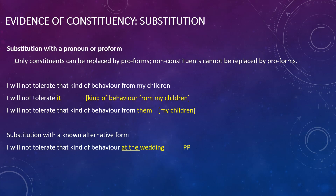So this gives us: 'I will not tolerate that kind of behavior at the wedding,' and this makes sense — it is a grammatical sentence. This suggests that the substitution has been felicitous, or in other words, it has worked out. And this suggests that the substituted item is a prepositional phrase. The logic is: we take something we don't know and replace it with something we do know, and if they behave the same way, we can infer they must be the same type.